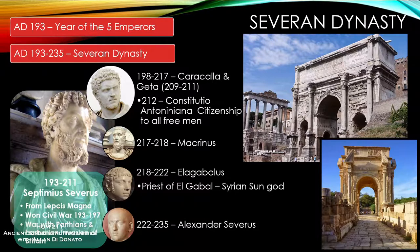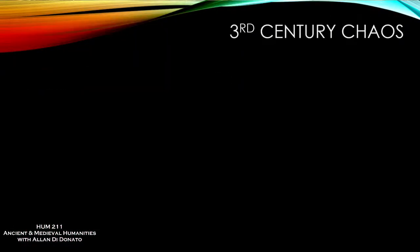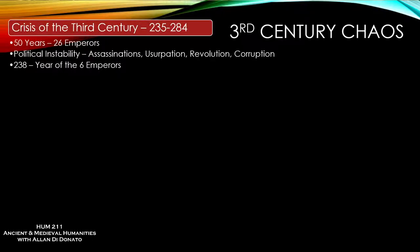The last in the family is Alexander Severus, and then the dynasty is done. The 3rd century, which follows from 235 to 284, really is a period of extreme chaos. In that 50-year period you're dealing with 26 separate emperors — a picture of instability like you can't imagine in world history. The average reign is less than two years. In 238 alone you have six emperors. Instability, assassination, usurpation, revolution, corruption — anything bad you can think of is happening in the 3rd century.